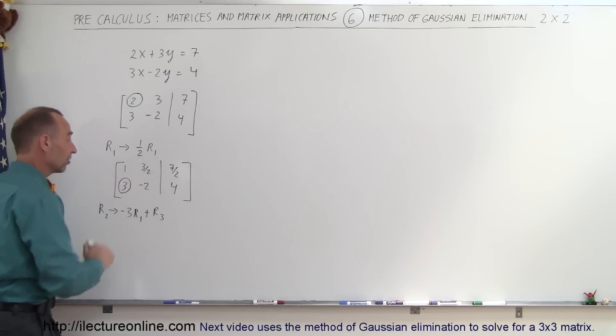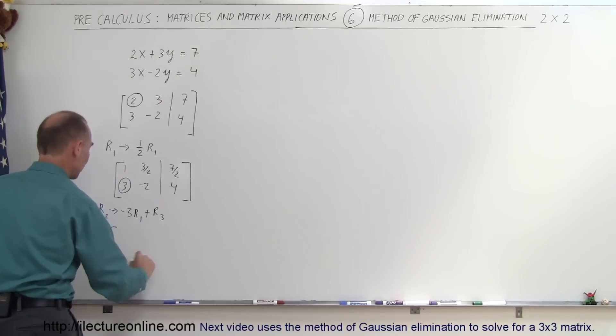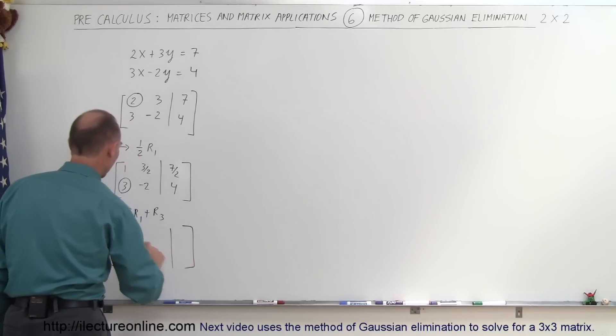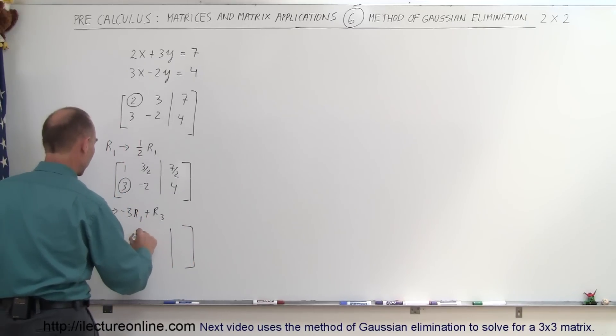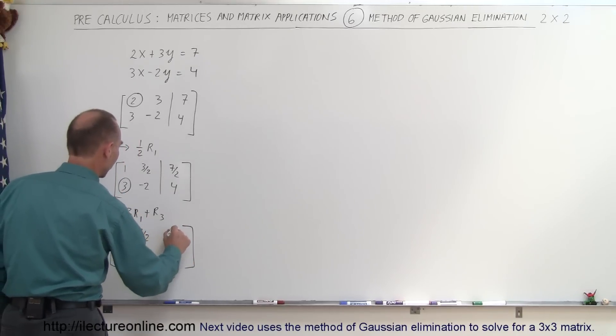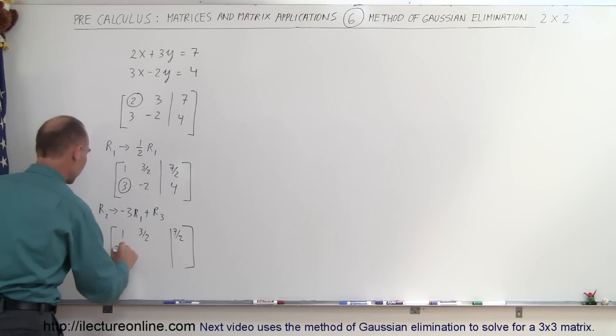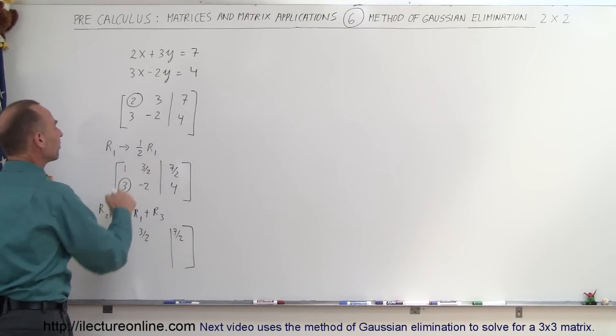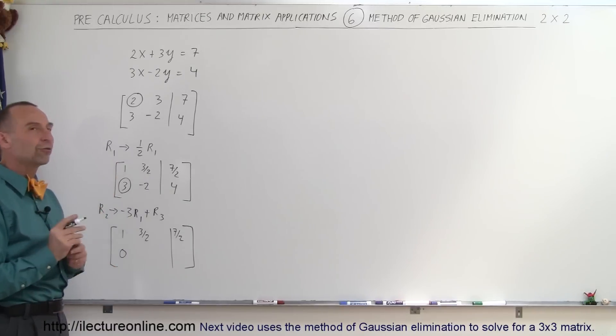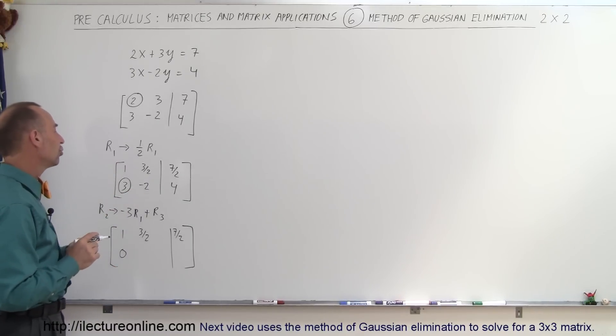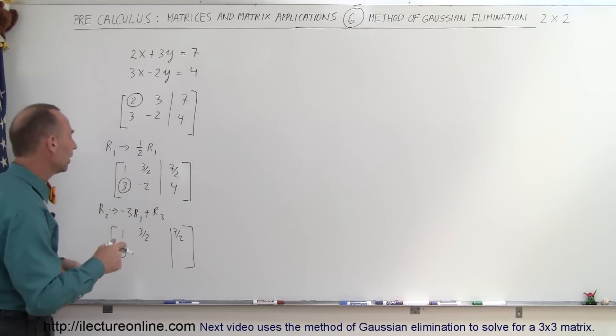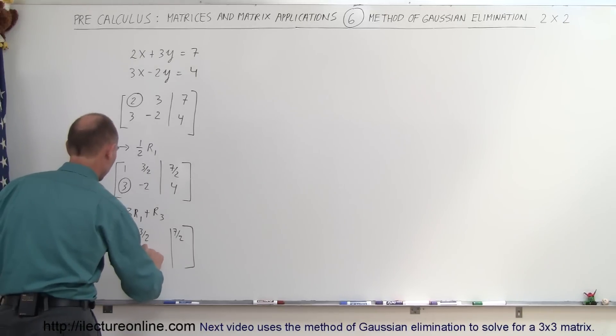Of course, I need to do the same to everything else in that row. The matrix will now become as follows. The first row does not change: I get a 1, a 3 halves, a 7 halves. But here, negative 3 times 1 added to 3 gives me 0. Negative 3 times this gives me minus 9 over 2. Add it to negative 2, that's another minus 4, that's minus 13 over 2.